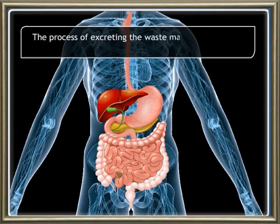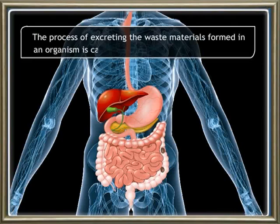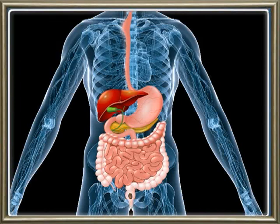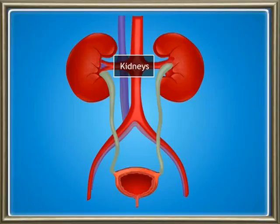When metabolic activities like nutrition, respiration and transportation take place in organisms, some waste materials are formed. If these waste materials remain in the body, they become toxins — that is, poison — and lead to death. Therefore, living organisms excrete them from the body, and this process is known as excretion. Skin, lungs and kidneys are the excretory organs in animals. There are no separate excretory organs in plants — plants have the ability to utilize waste materials for their own usage.